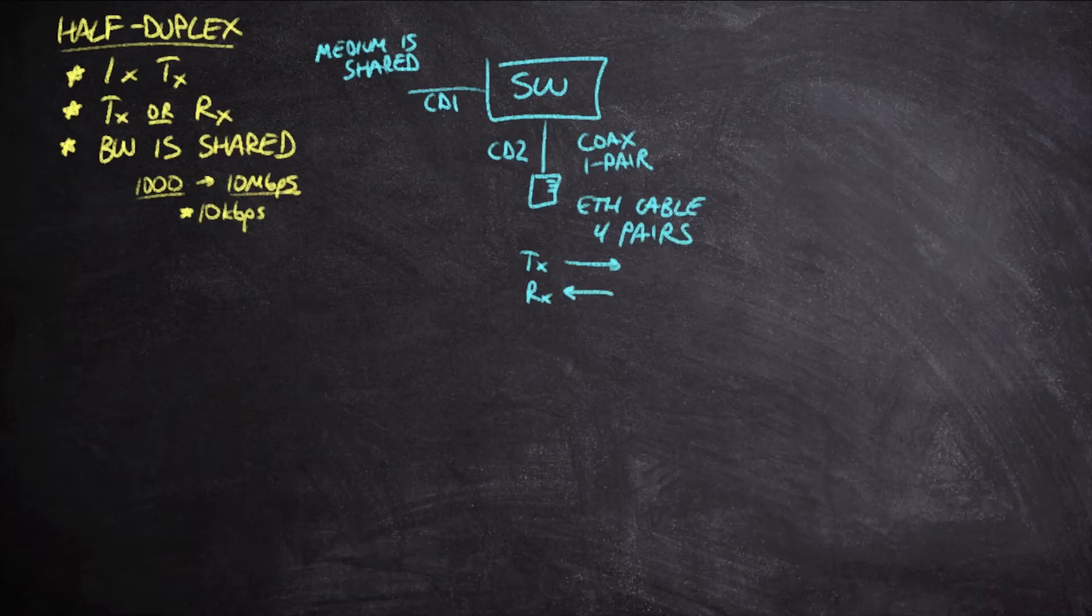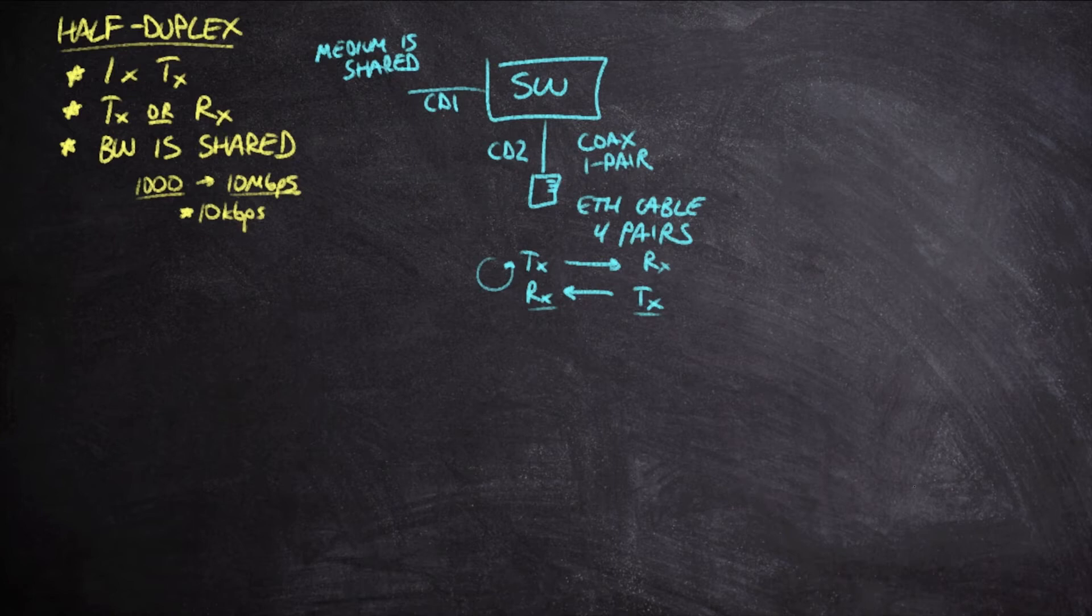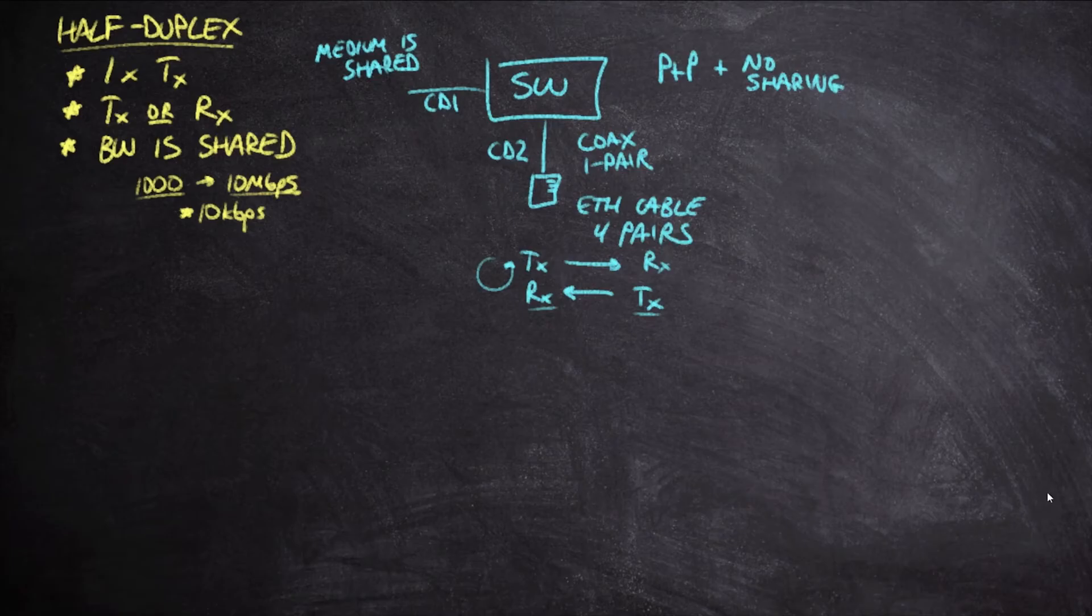We spent quite a bit of time talking about this earlier on in the course and aligning, for example, a host to a switch such that we make sure that we're in alignment this way. So the transmission is sent on the same pair that I'm expecting to receive on and vice versa. So between the fact that we have a point-to-point connection and the fact that we are not sharing the medium, we can now move to a new type of communication that we can call full duplex.